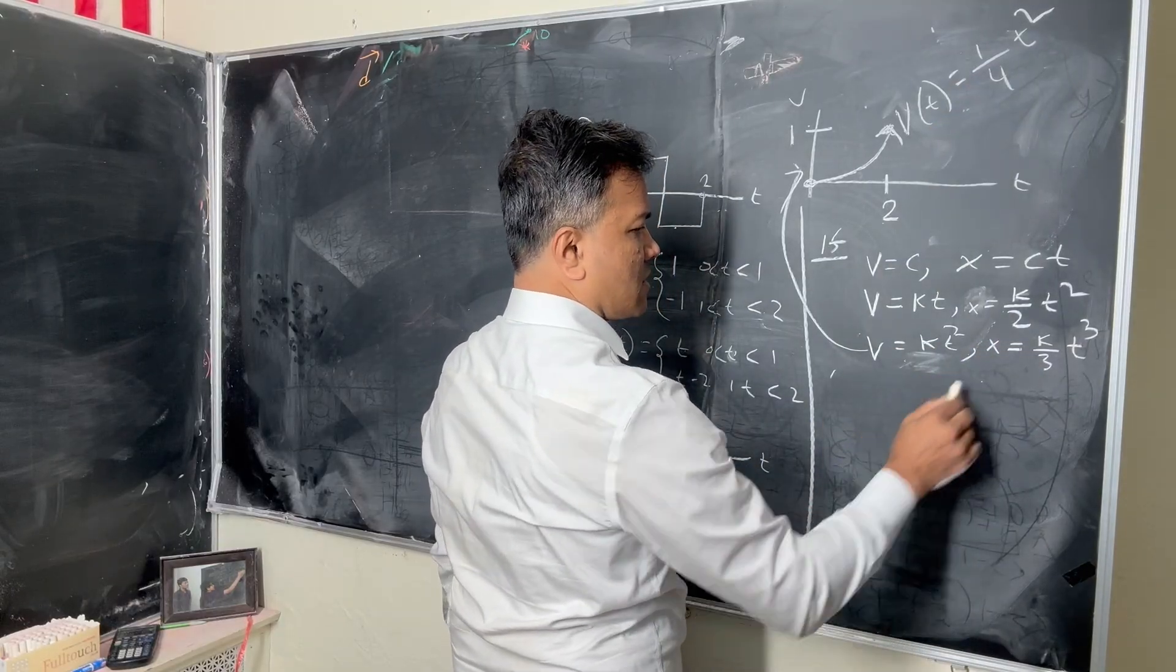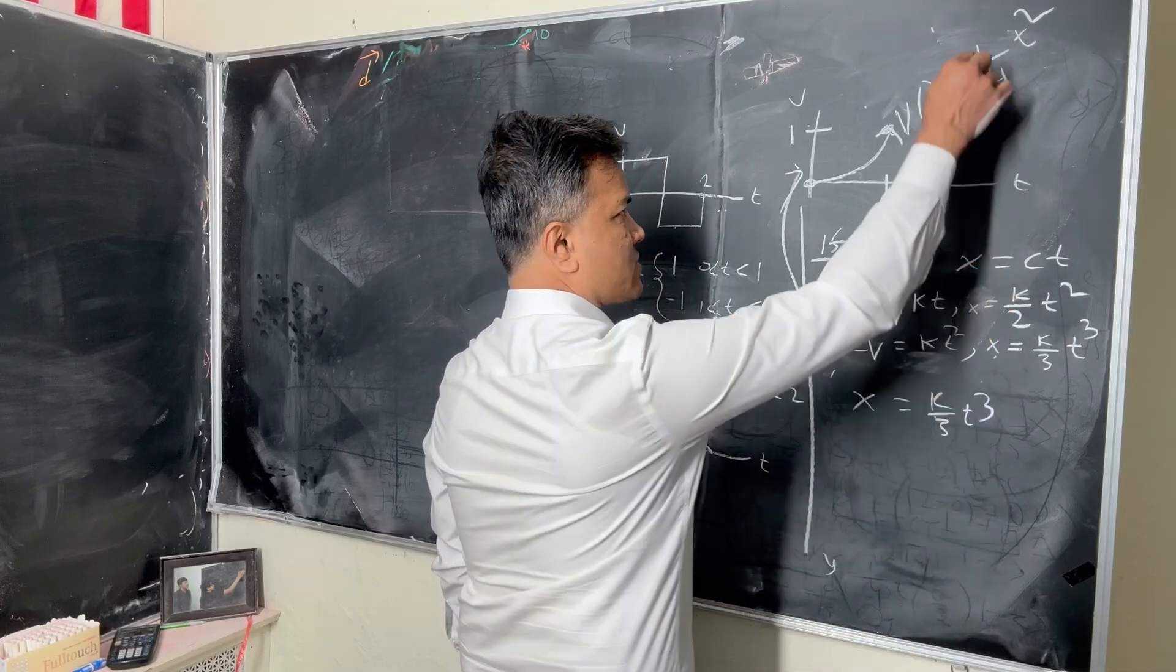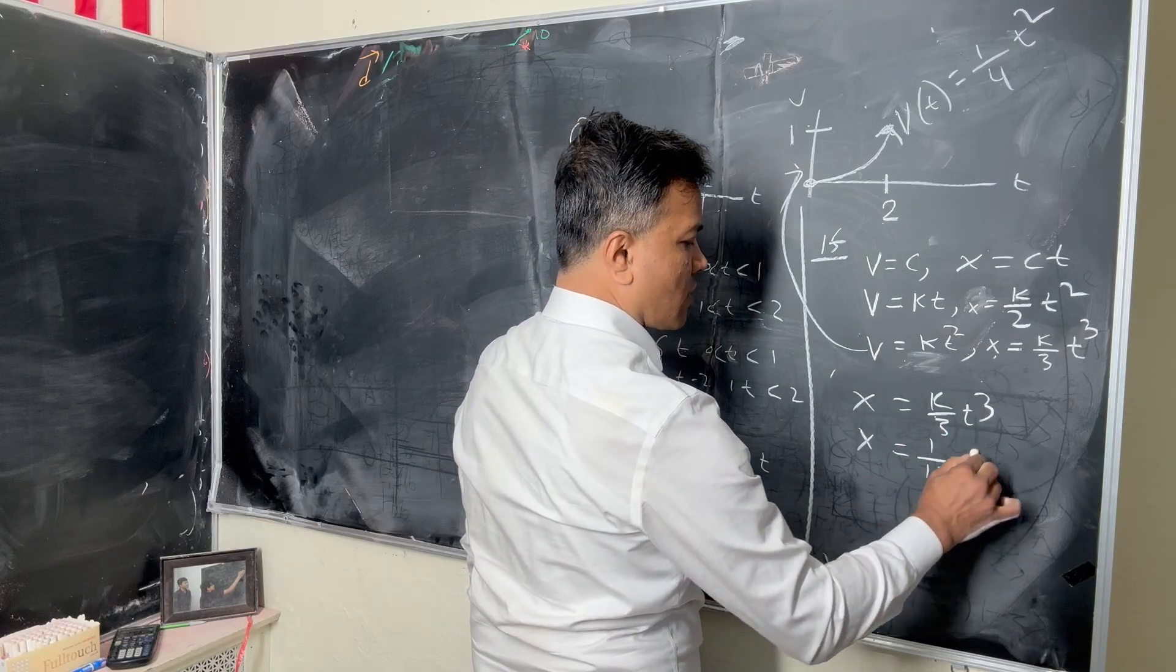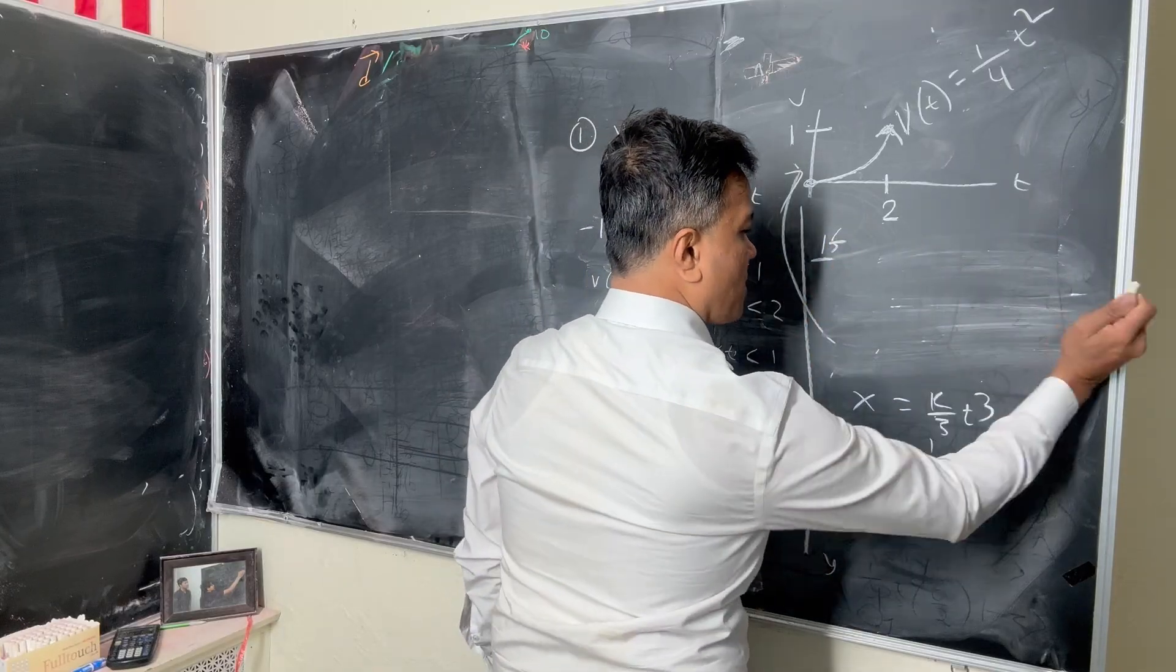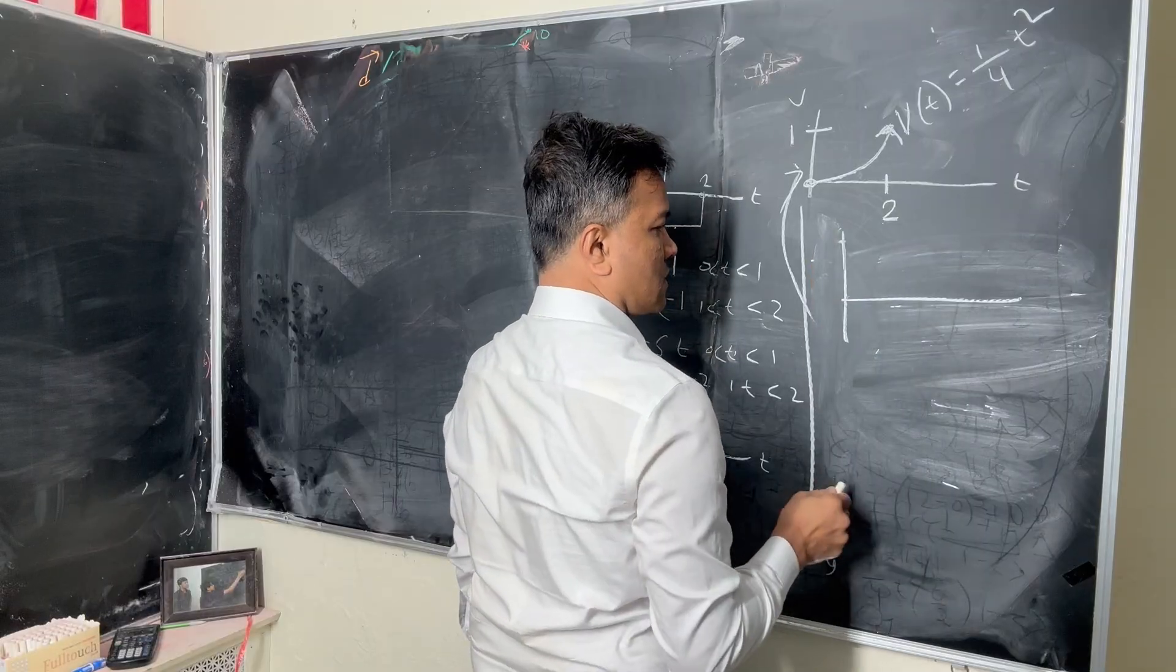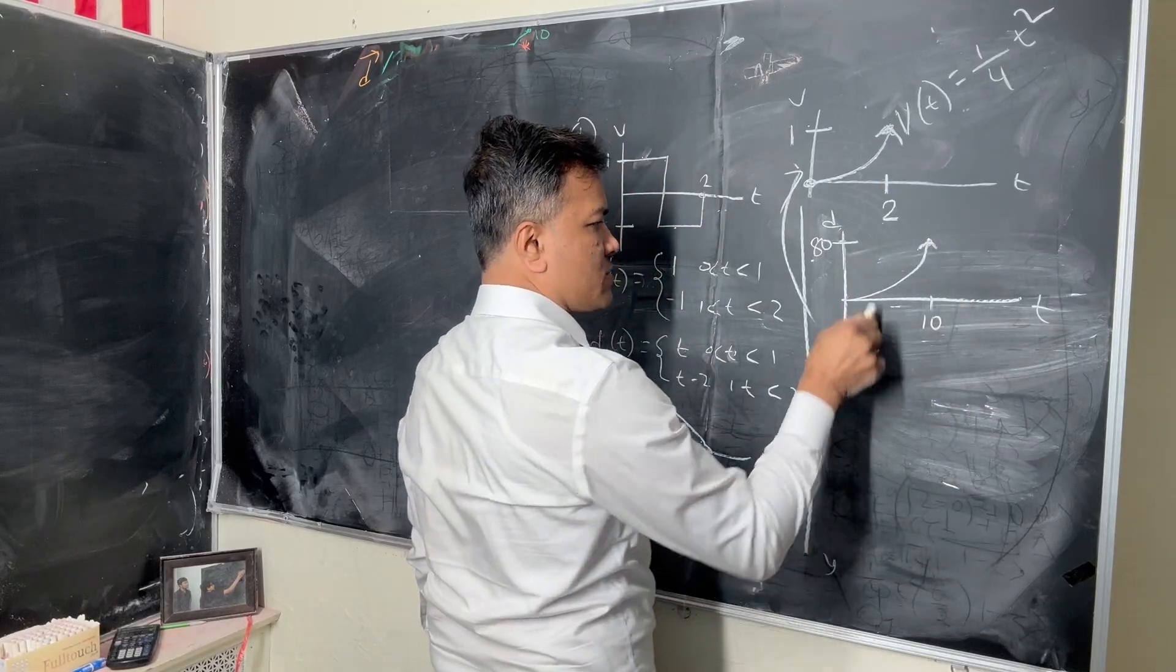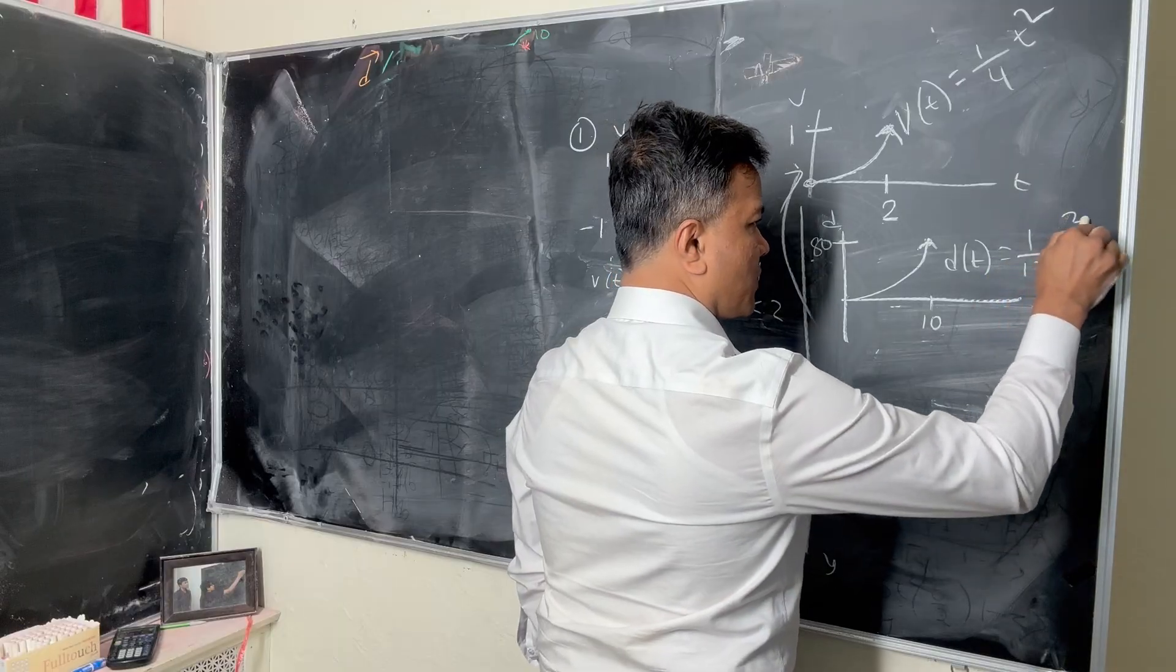Then X, the DT, would be what? We see that X is K over 3 T cubed. Our K is 1 over 4, so X is 1 over 12 T cubed. Now we're going to draw DT. DT is at 0, 0, and at 2 seconds it's going to be 2/3 meter. They look the same, but this one increases faster because this is cubic. DT is 1 over 12 T cubed.